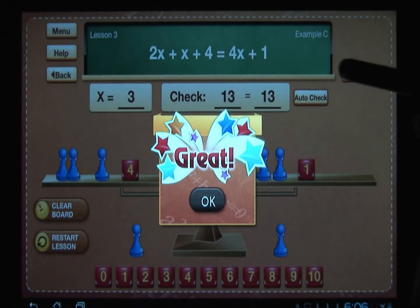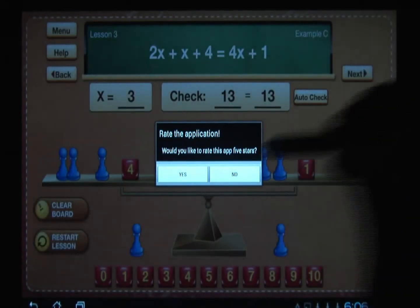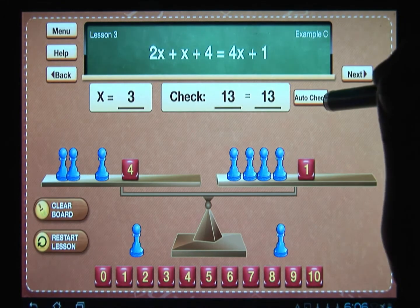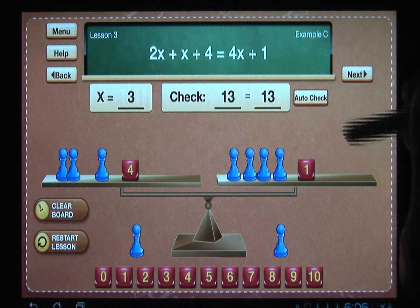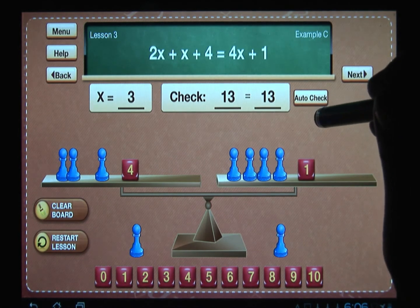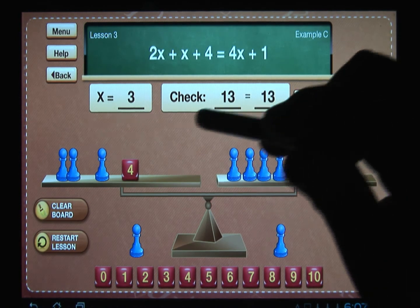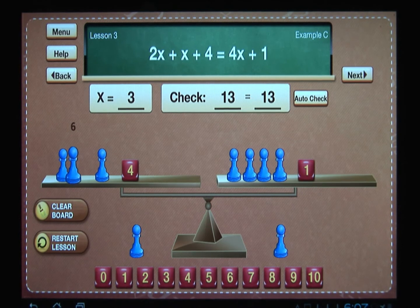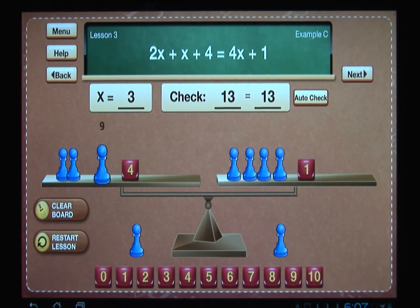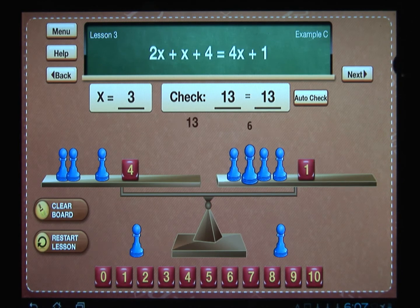Now notice that we also have an auto check here. So the auto check is a function that enables the app to do the check for you. Let's see how it works. Notice it's doing the arithmetic for the student, and some younger students like this auto check because they can test themselves if they can do the arithmetic quicker than the app.